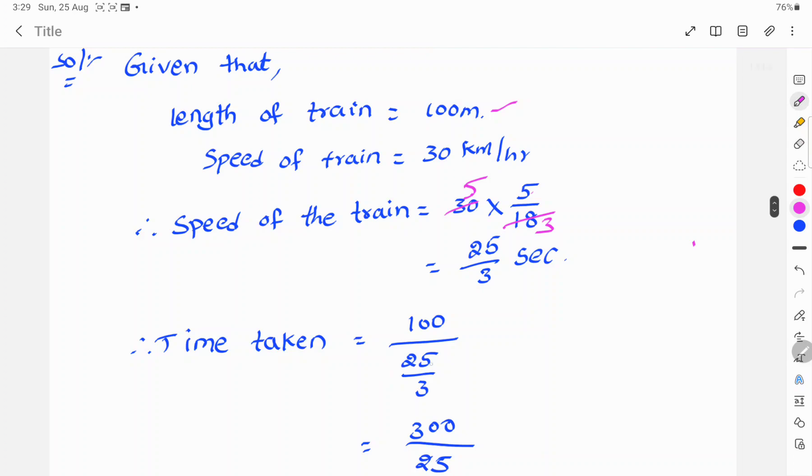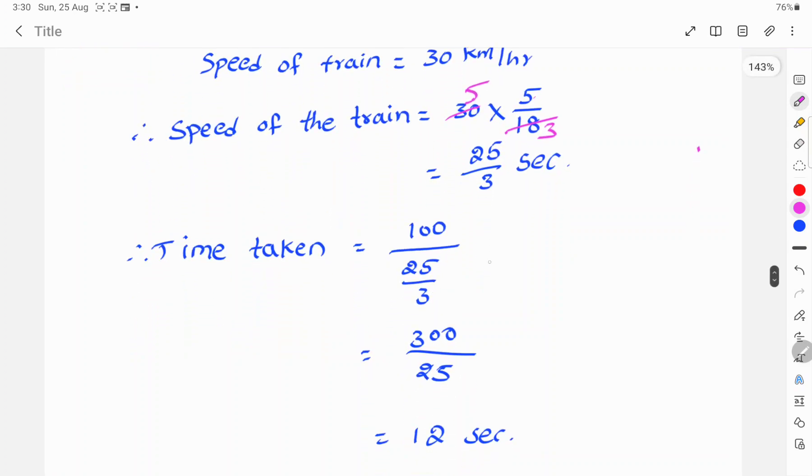time taken is equal to 100 by, because length of the train by speed of the train is 25 by 3. So 25 by 3 is changed to 100 into 3 by 25.